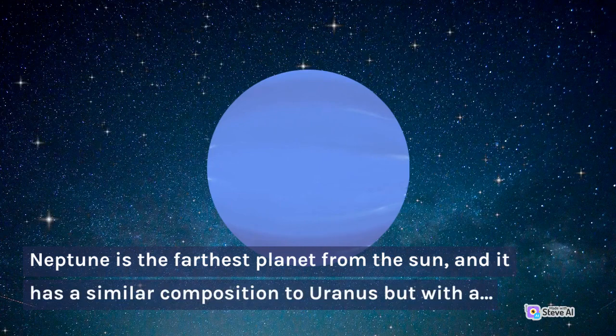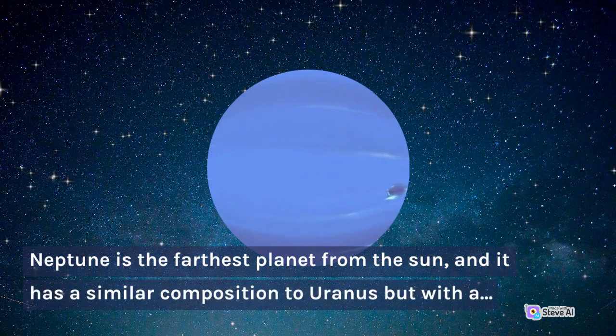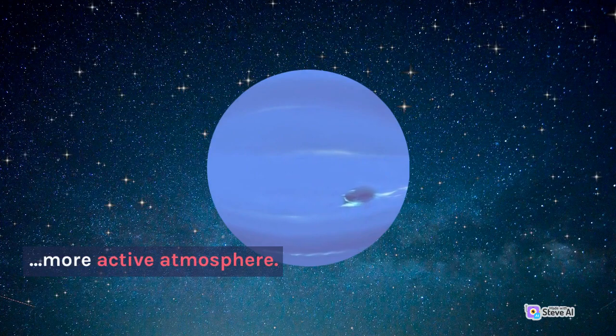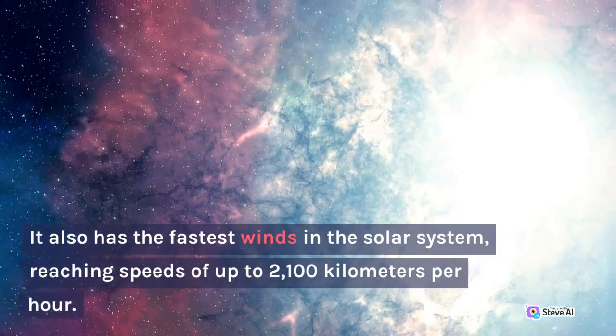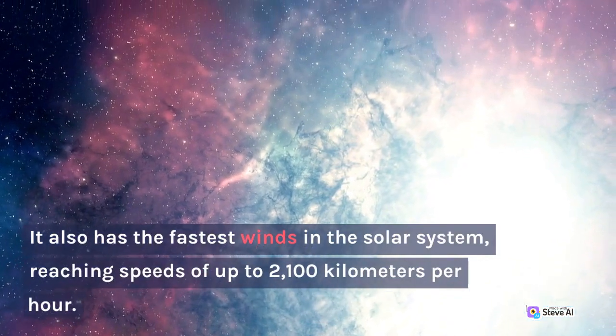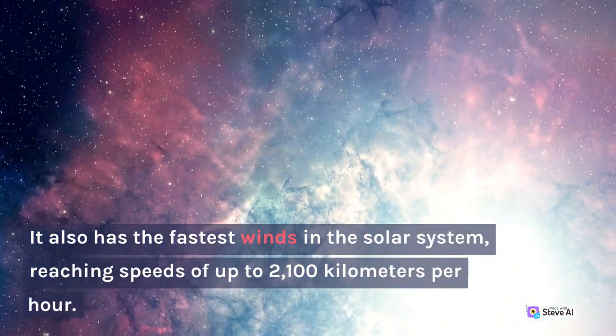Neptune is the farthest planet from the sun and it has a similar composition to Uranus but with a more active atmosphere. It also has the fastest winds in the solar system, reaching speeds of up to 2100 km per hour.